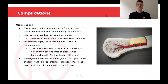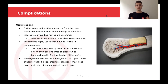Some further complications that may occur from a mid-shaft fractured femur may be bone displacement causing nerve damage or blood loss. Injuries to surrounding nerves are uncommon, whereas blood loss is a more likely complication. The femur is highly vascularized due to its role in hematopoiesis. The bone is supplied by branches of the femoral artery, thus large volumes of blood can be hemorrhaged when there's a fracture — we can sometimes see up to 1.5 liters. The thigh is a large compartment and can itself hold up to three liters of hemorrhaged blood.